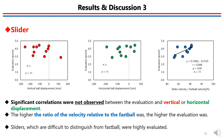For the slider, although significant correlations were not observed between the evaluation and vertical or horizontal displacement, the higher the velocity ratio relative to the fastball, the higher the evaluation. A pitcher throws a slider mainly to force batters to miss their swing. If the ball were slow and largely curved or dropped like a curveball, the batter would not swing. Therefore, balls with greater velocity relative to the fastball were highly evaluated.